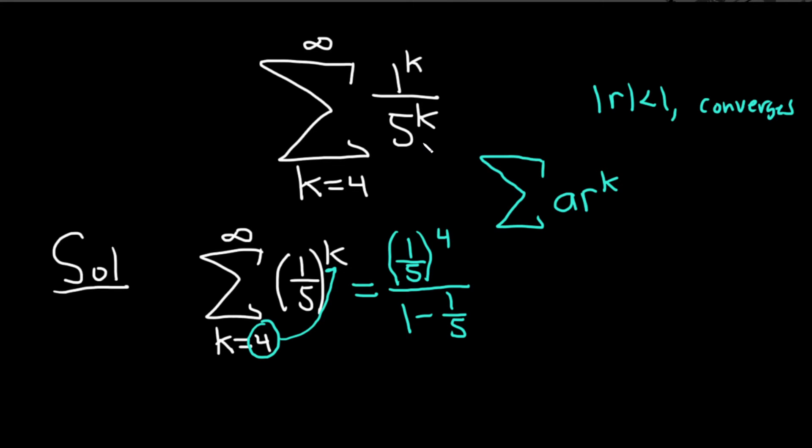That would be the sum of the infinite geometric series. If we work this out to see what this is: 1 over 5 to the 4 equals 0.0016. And 1 minus 1/5 is 4/5, which is 0.8.